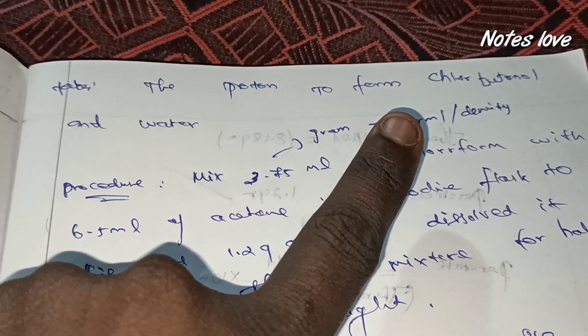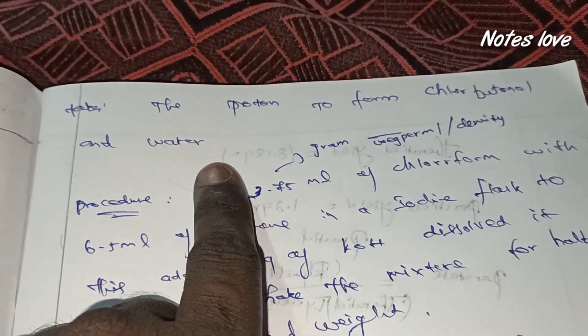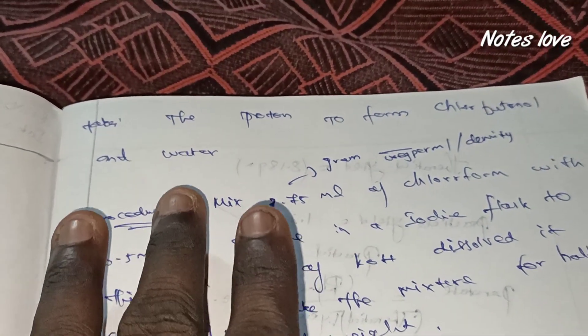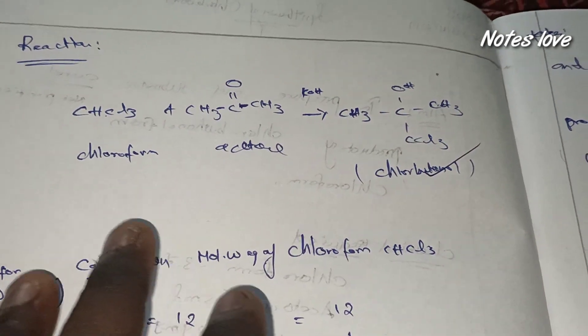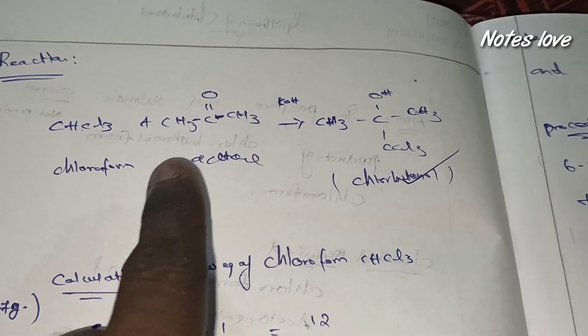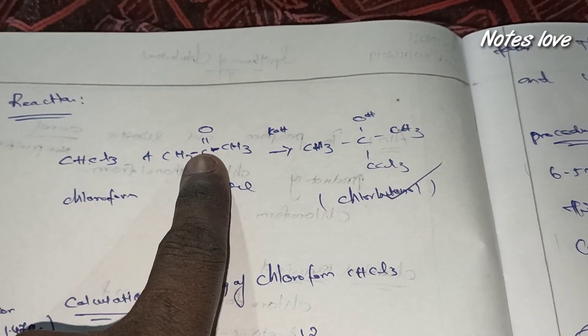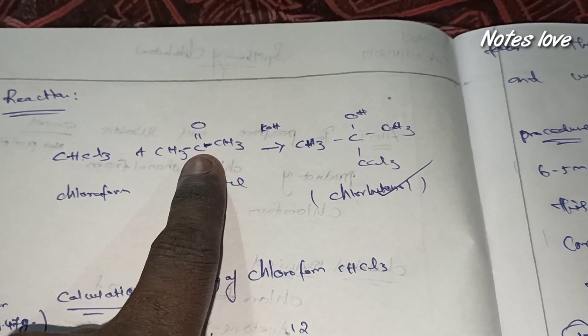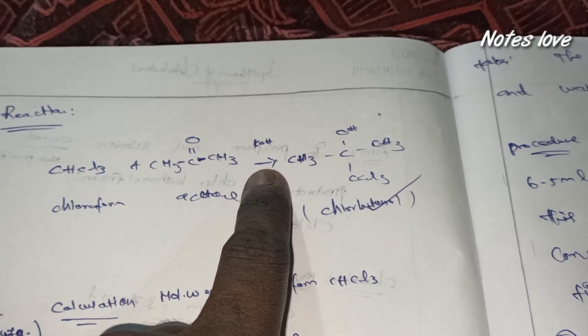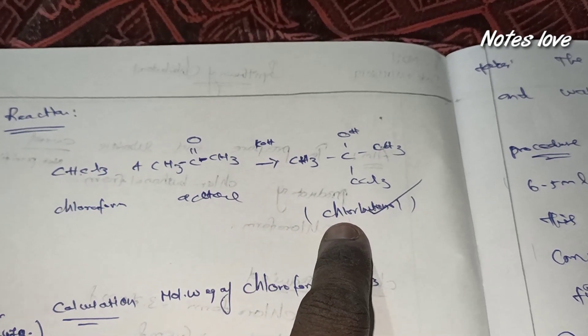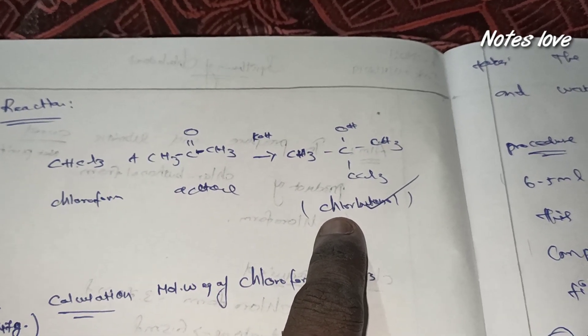This is a little bit confusing. We just see about in a reaction, it's very easy. Chloroform and acetone, this is a carbonyl carbon, is converted in presence of potassium hydroxide. Chlorobutanol is converted, we got the product.